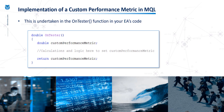So how do we implement a custom performance metric in MQL? This is undertaken in a function called OnTester within your EA's code. The only purpose of OnTester is to create your own custom performance metric. You do that within the function and then simply return that value, and then MetaTrader knows that that is what it's going to use in order to rank the different parameter values in the optimization.